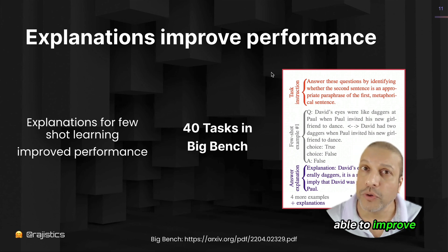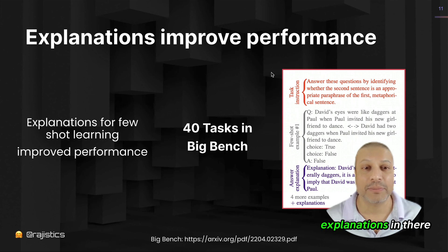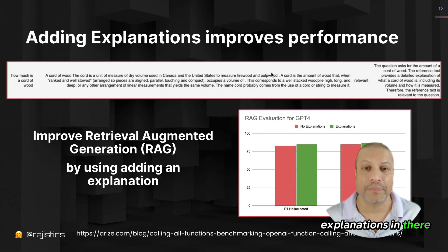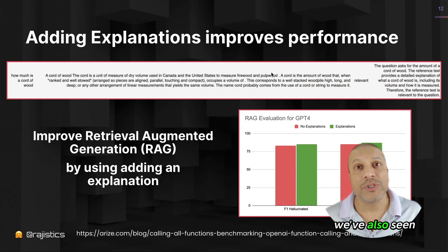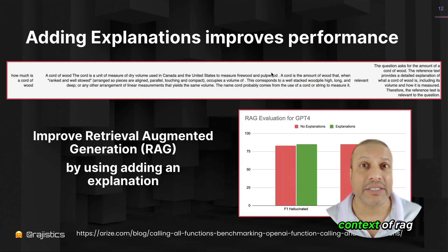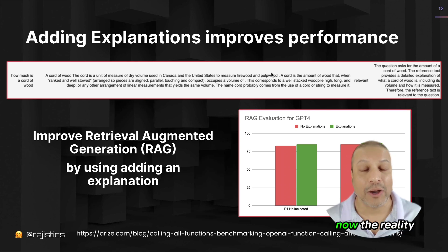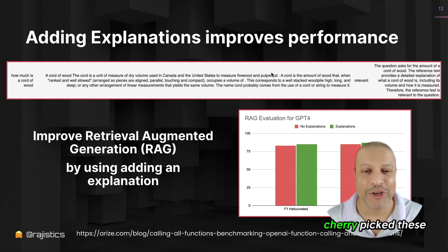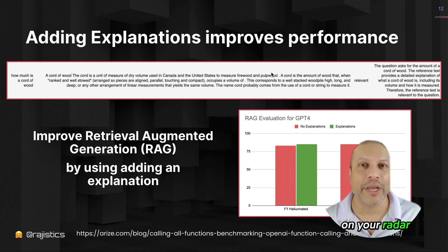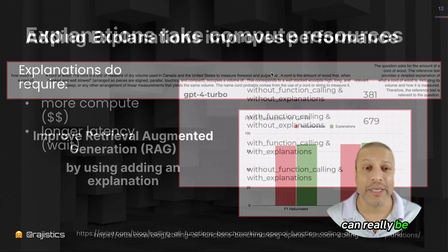We've also seen this in the context of RAG. As the graph shows, when we added explanations in, we ended up with better performance. Now, the reality is I kind of cherry-picked these results, but I just want to get on your radar that sometimes adding these explanations can really be helpful.